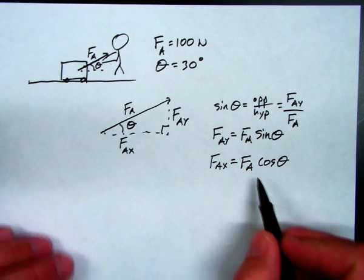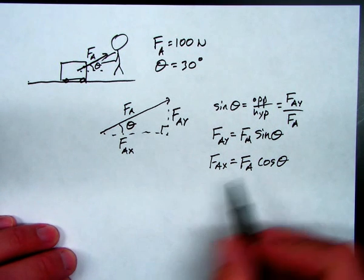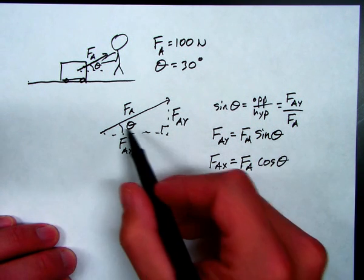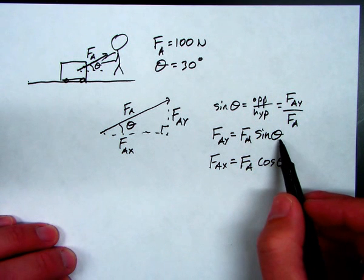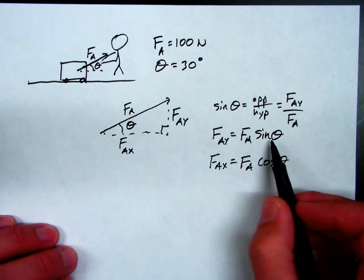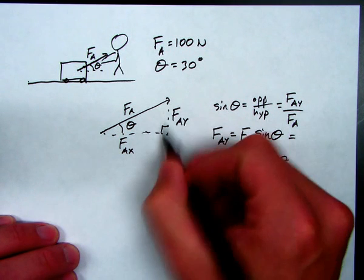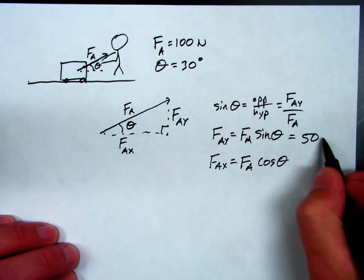All right. So, in this problem, we have FAY sine of 30. You might remember from math that the sine of 30 is 0.5. So, if I have 100 times 0.5, the vertical component of this force is 50 newtons.